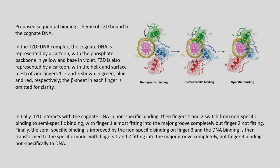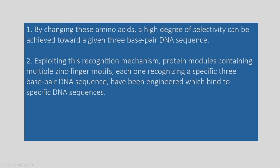In the TGD-DNA complex, the cognate DNA is represented with the phosphate backbone in yellow and bases in violet. Initially the TGD interacts with cognate DNA in a non-specific manner. Fingers 1 and 2 then switch to semi-specific binding, with finger 1 almost fitting into the major groove completely but finger 2 not yet. Finally, the semi-specific binding is improved and transformed to specific mode with fingers 1 and 2 fitting completely into the major groove, while finger 3 binds non-specifically.